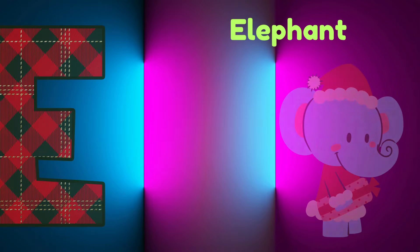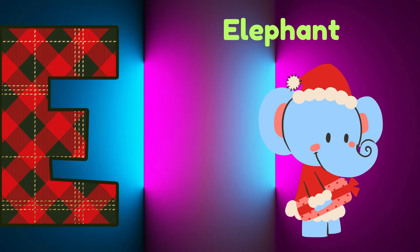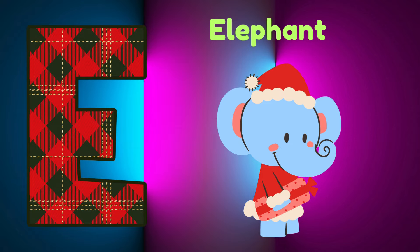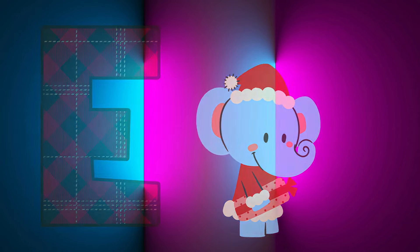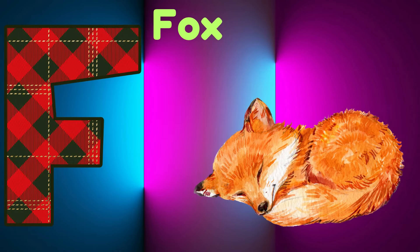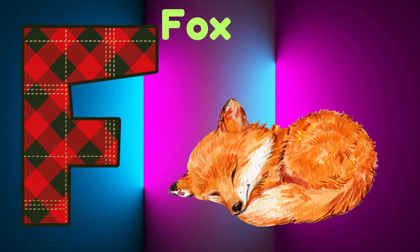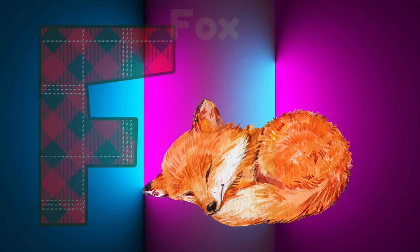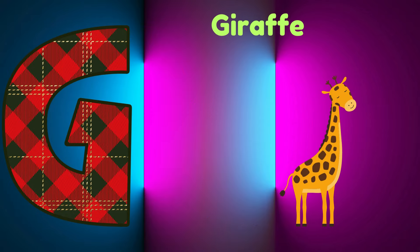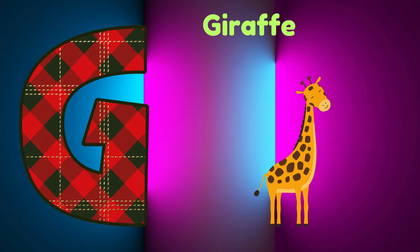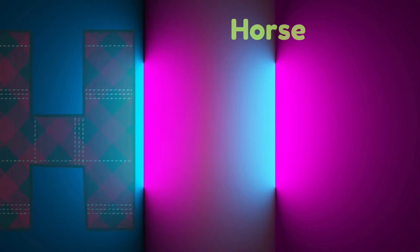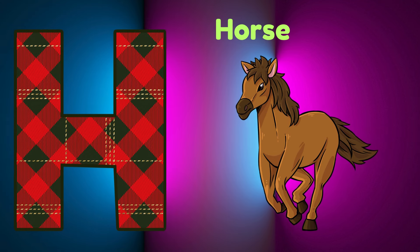E is for Elephant. E, E. Elephant. F is for Fox. F, F. Fox. G is for Giraffe. G, G. Giraffe.